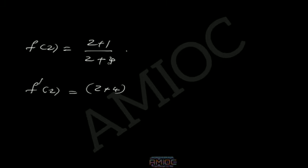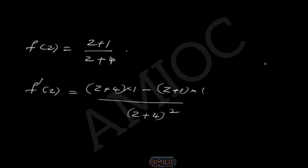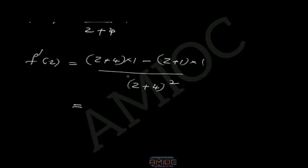We evaluate the second derivative of f(z) = (z+1)/(z+4). First, we find the first derivative using the quotient rule: f'(z) = [(z+4)·1 − (z+1)·1]/(z+4)² = [(z+4) − (z+1)]/(z+4)² = 3/(z+4)².